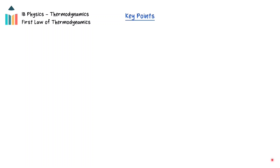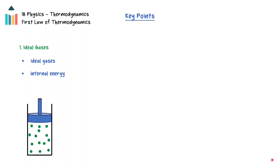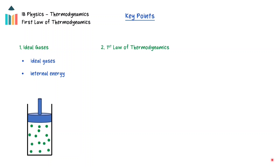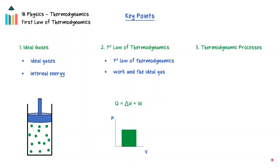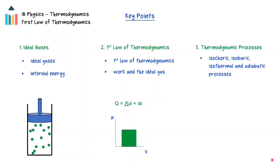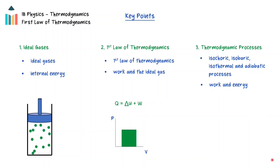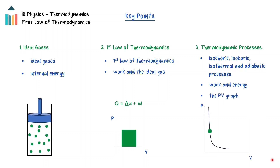In this video, we will explore the first law of thermodynamics. First, the properties of an ideal gas will be discussed, including the internal energy of the particles of an ideal gas. Secondly, the first law of thermodynamics will be explained, and the idea of the work done by an ideal gas will be explored. Finally, the thermodynamic processes will be discussed by explaining how they are related to the first law of thermodynamics and shown on a pressure-volume graph.